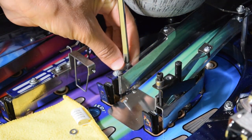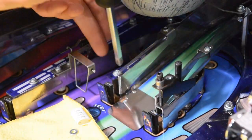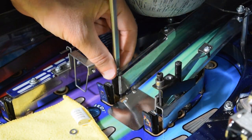After removing the standoff posts and washers, remove the two screws and the washers on the left side of the ramp.